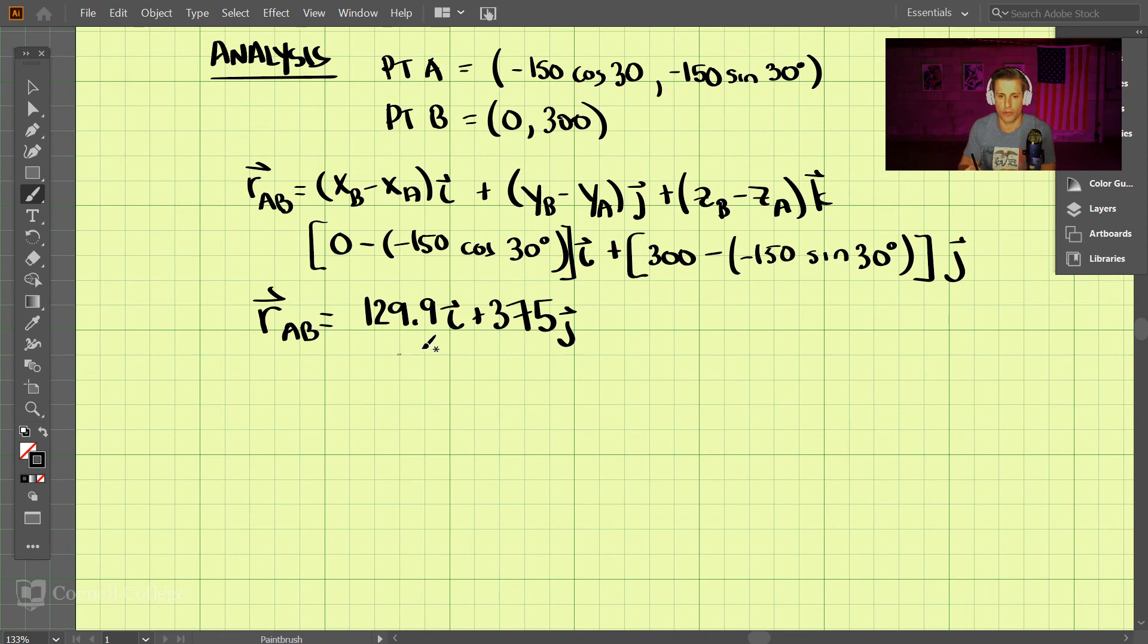Okay, so we have that. So what is the length? To find the magnitude of this, we just do the sum of the squares and take the square root of that. So we have 129.9 squared plus 375 squared, and then the square root of that whole thing. And that's 397 millimeters. And that is our answer for 286.